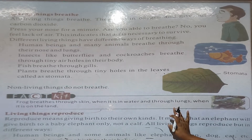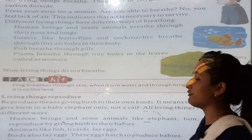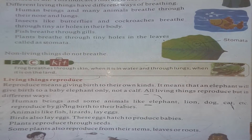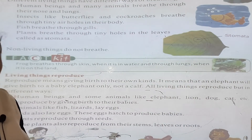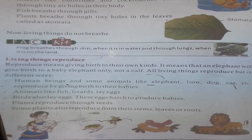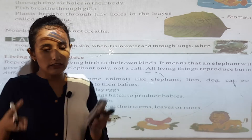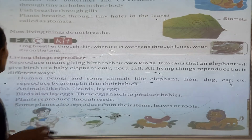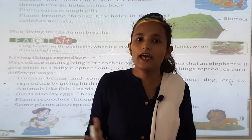Non-living things do not breathe. Living things reproduce — reproduce means giving birth to their own kind. An elephant will give birth to a baby elephant only. All living things reproduce in different ways; they all have their own babies.